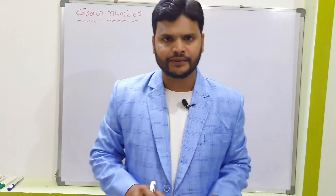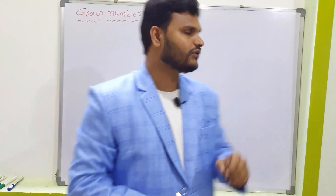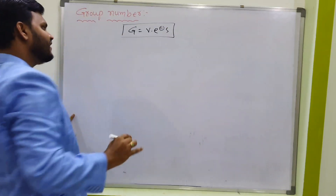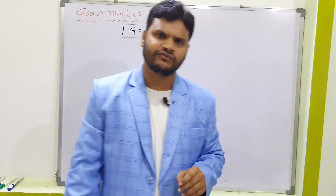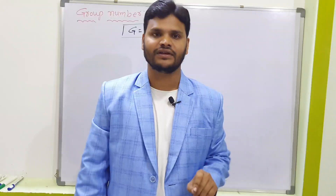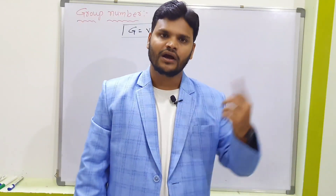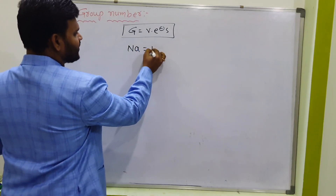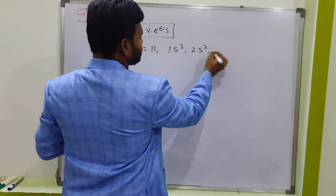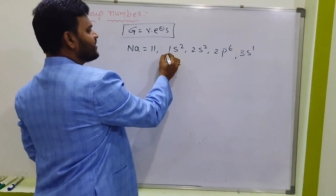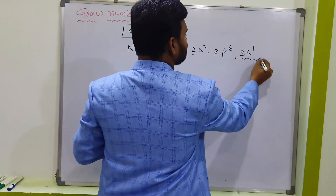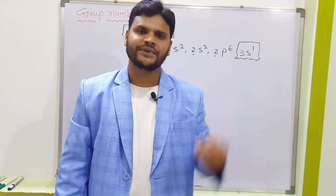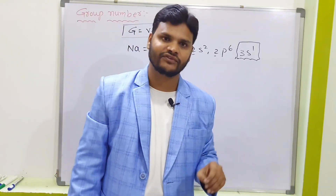What is the group number? Total periodic table contains 18 groups. There is a formula: group number equals valency electrons. G equals valency electrons. What are valency electrons? The number of electrons present in the outermost energy level are called valency electrons. For sodium, atomic number 11, the electronic configuration is 1s², 2s², 2p⁶, 3s¹.